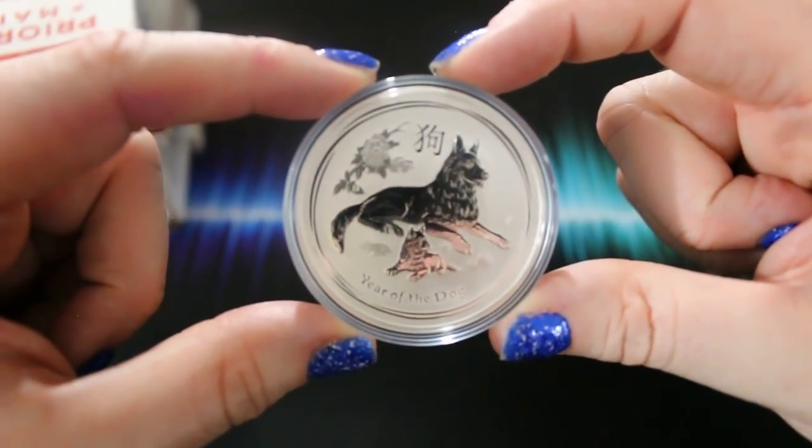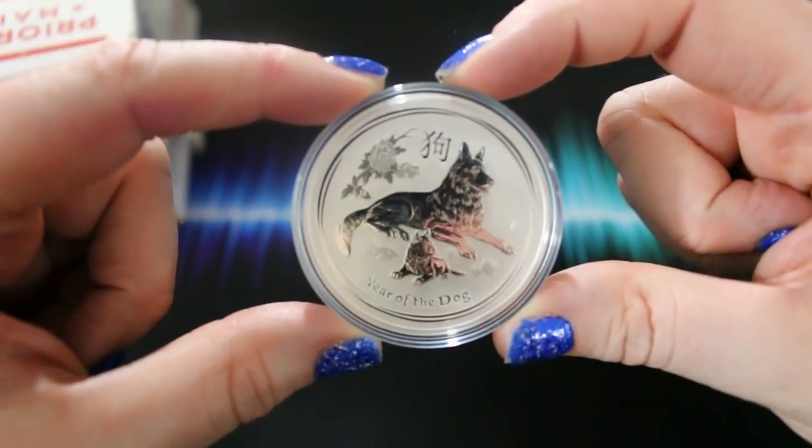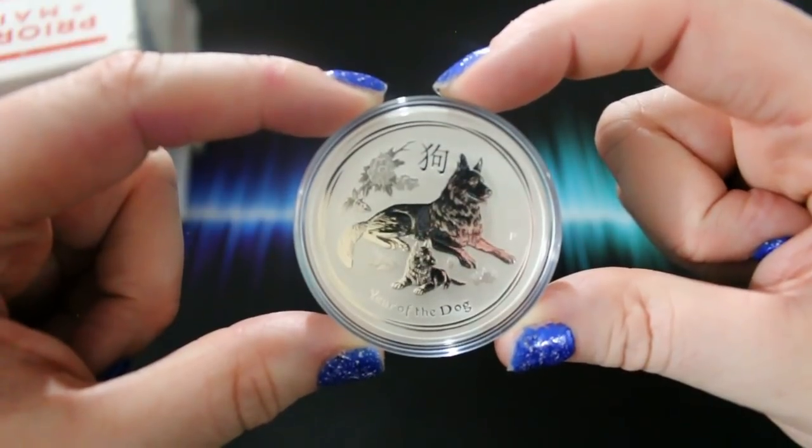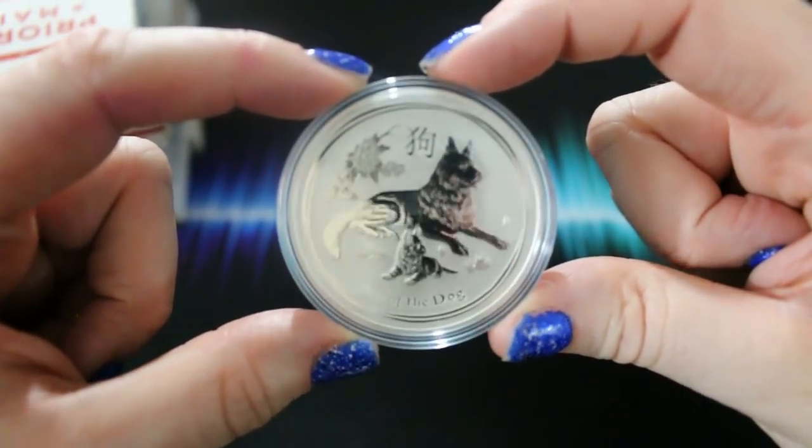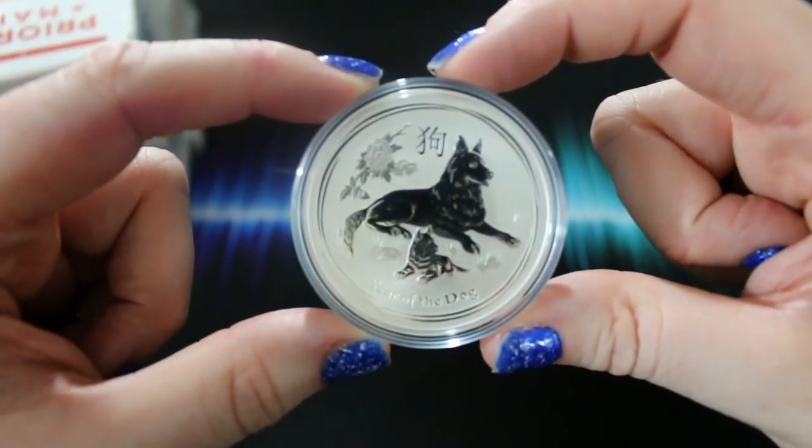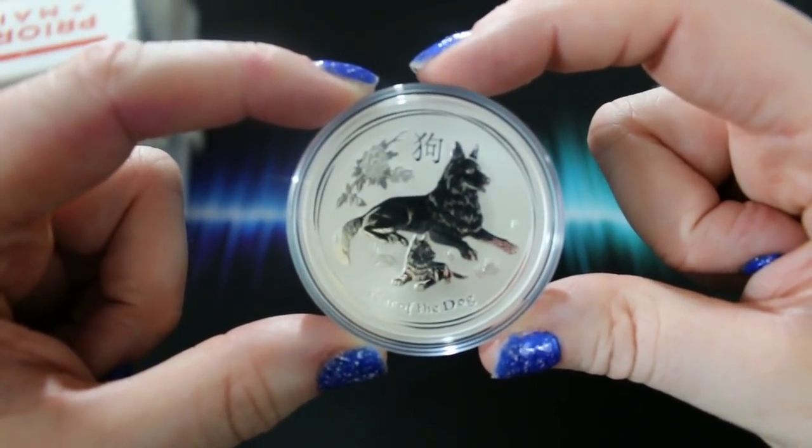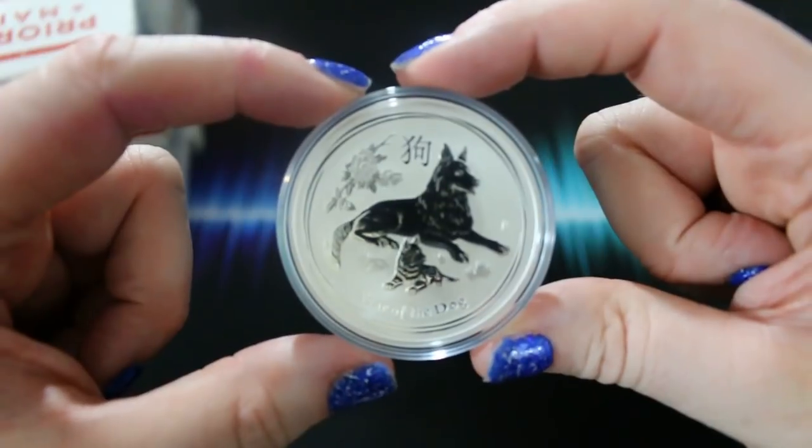So here is my one ounce Year of the Dog that I just purchased and from now on I will try to pick up one of the one ounce Silver Lunars each year. I'd like to go backwards in this series but I'm waiting for a good deal because the premiums are kind of high on these.